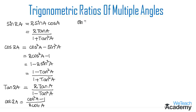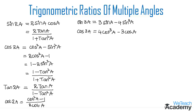Sin 3A is equal to 3 sin A minus 4 sin cube A. The next ratio, tan 3A, is equal to 3 tan A minus tan cube A divided by 1 minus 3 tan square A.